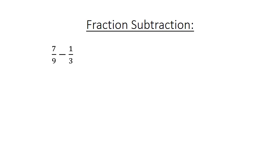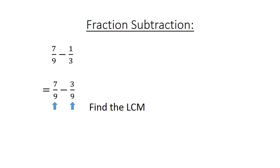Fraction subtraction: 7 over 9 minus 1 over 3. Find the lowest common multiple: 7 over 9 minus 3 over 9 equals 4 over 9.